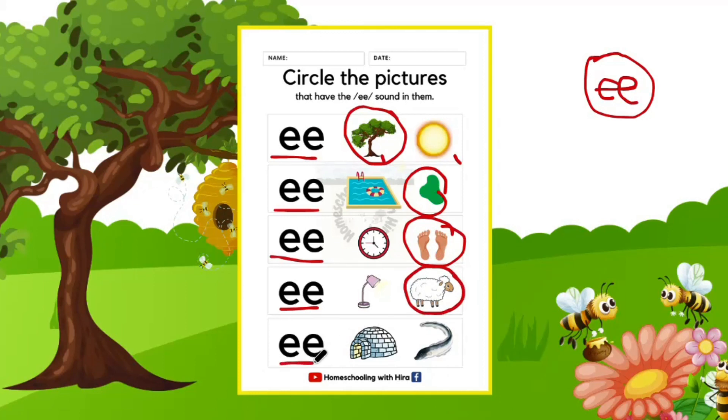E. Igloo. Eel. This fish is an eel. This is the name of the fish. Eel. Do you hear E in igloo or eel? In eel. We have E in eel. Kudos. We did it.